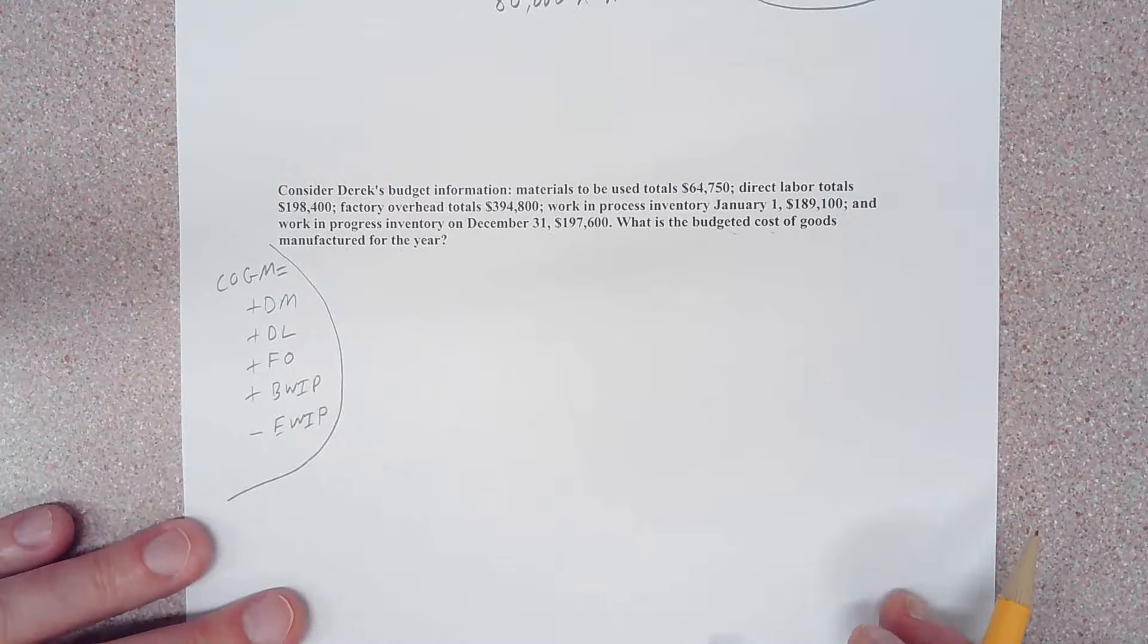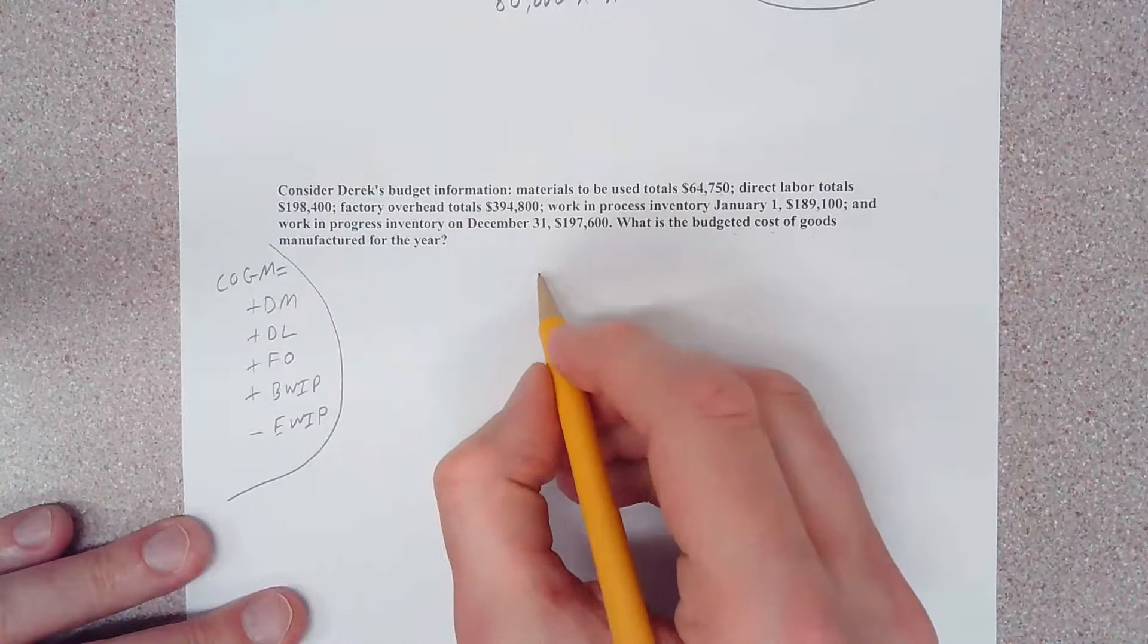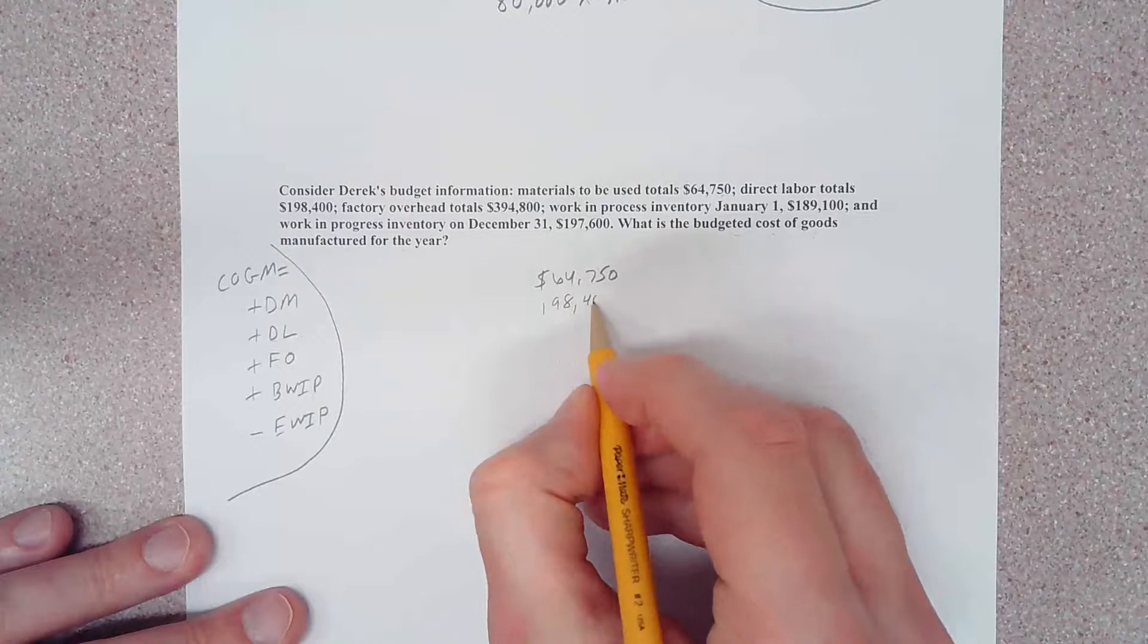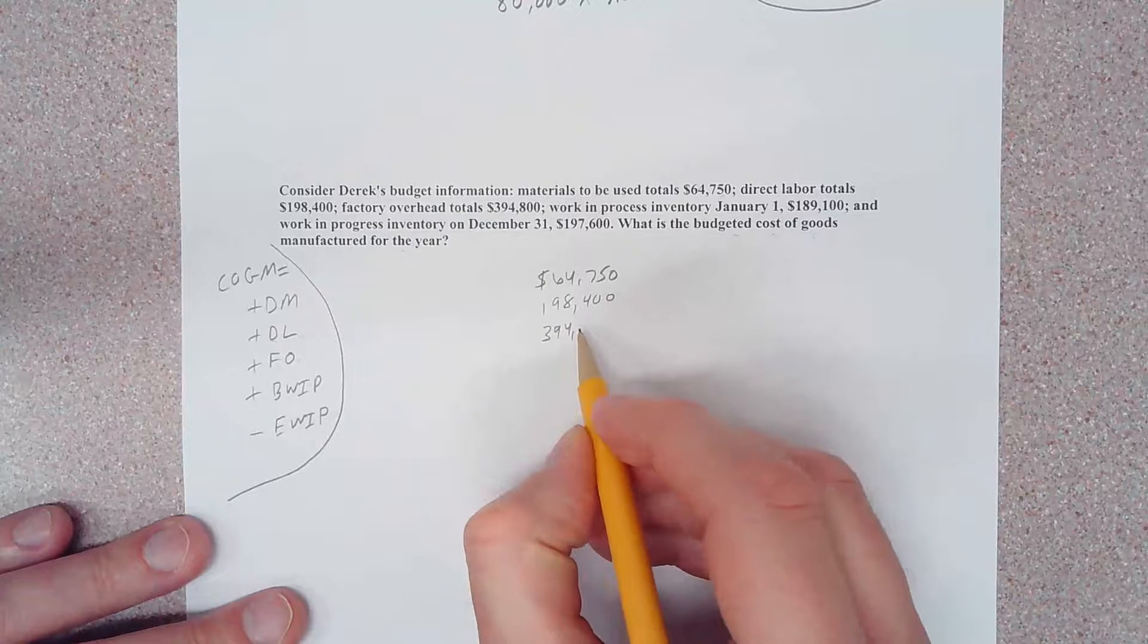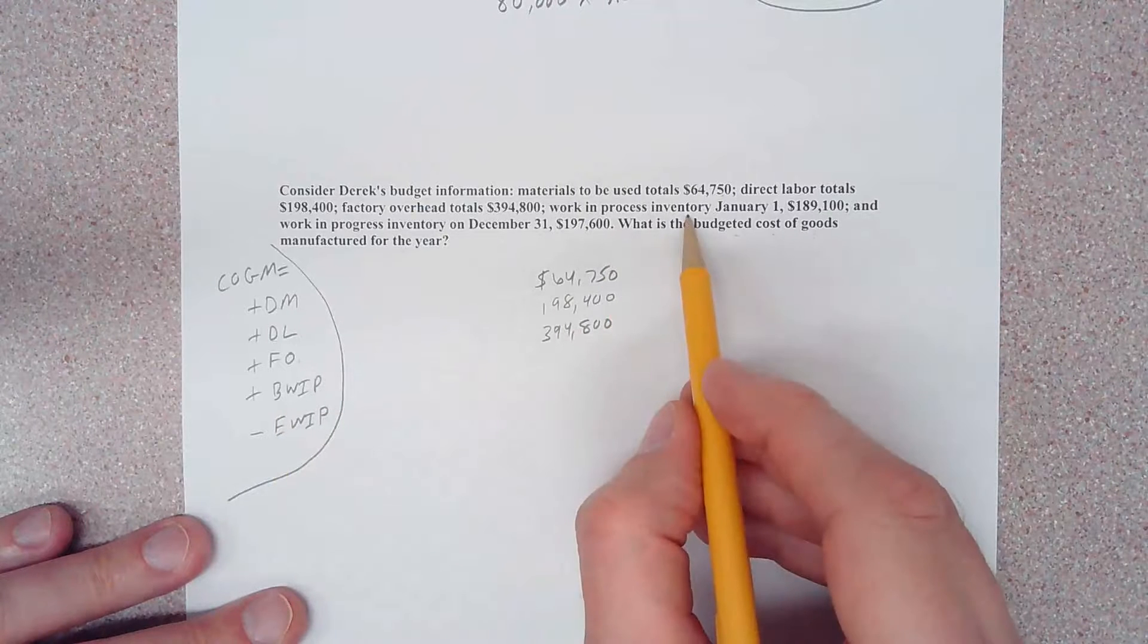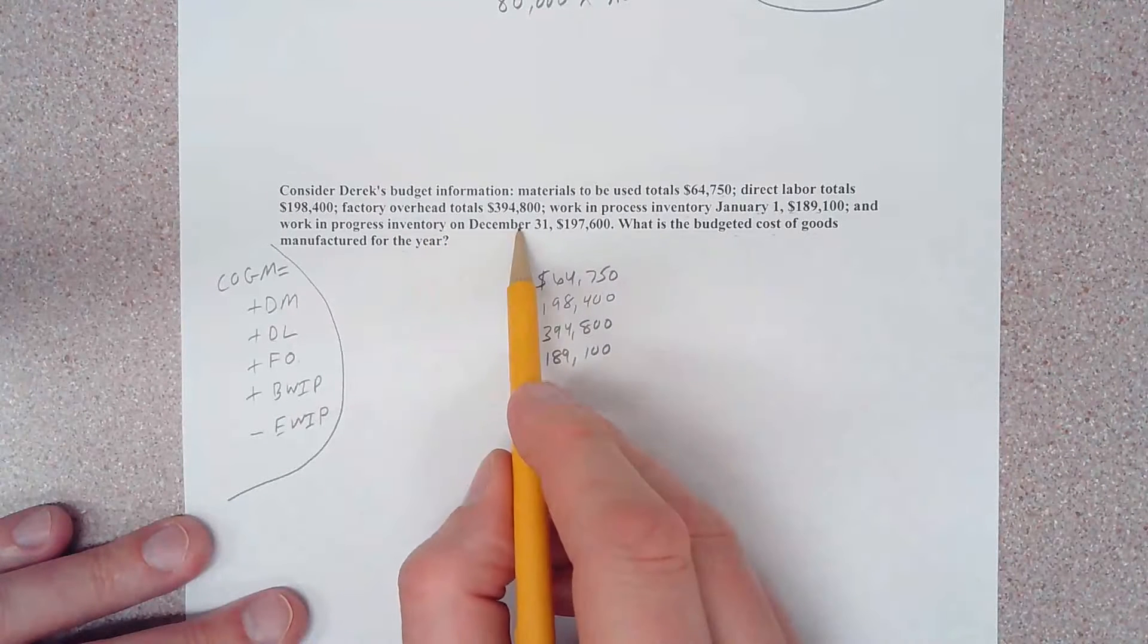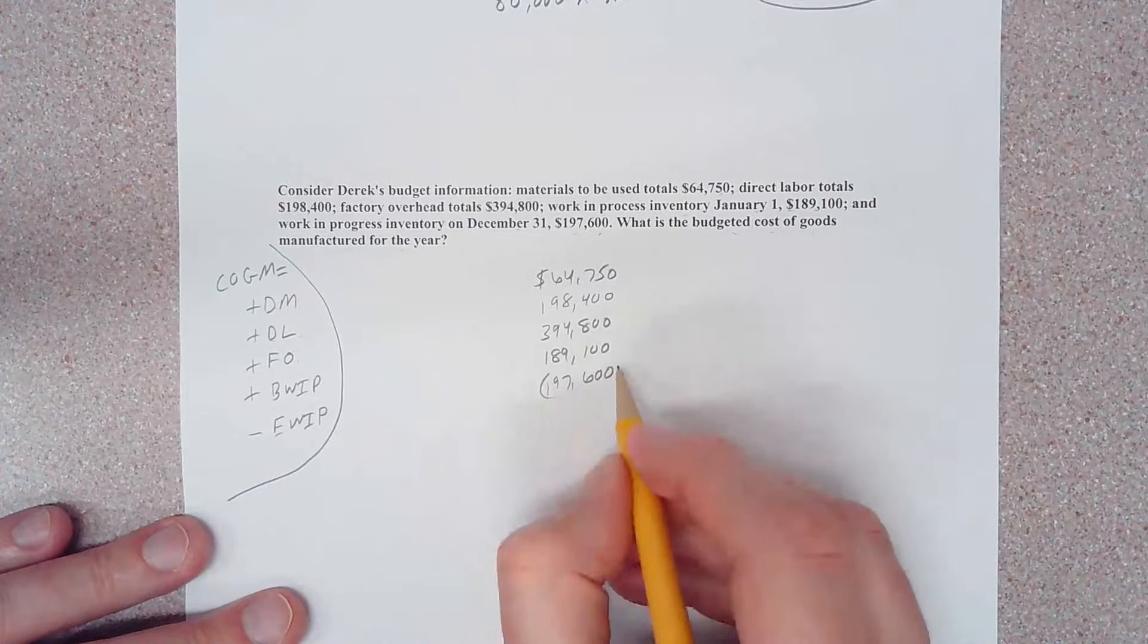Okay, so let's grab these pieces. Direct materials is the first item, so we're just going to take 64,750. Direct labor is 198,400. Factory overhead is 394,800. Work in process inventory on January 1st is 189,100.